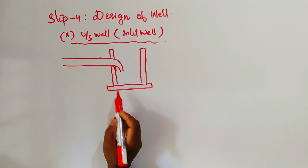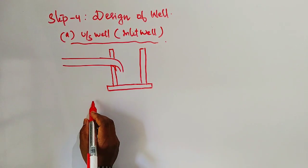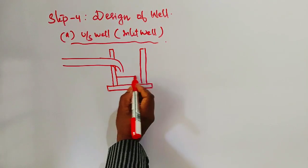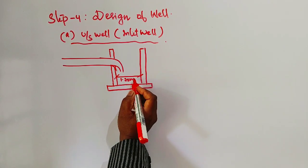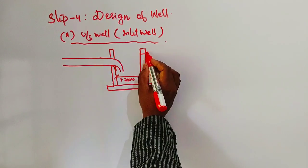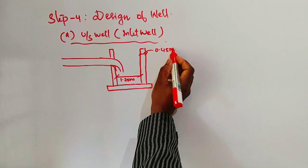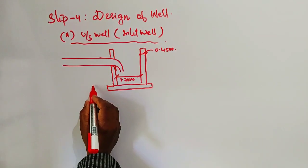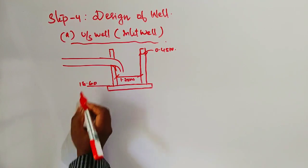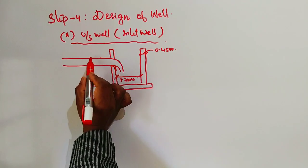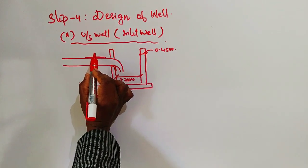Inlet well width given in the question is 1.5 meters. Wall thickness provided is 45 centimeters, that is 0.45 meters. Bottom level of inlet well is 18.6, and top level of canal is 21.60.